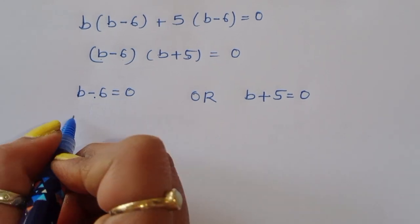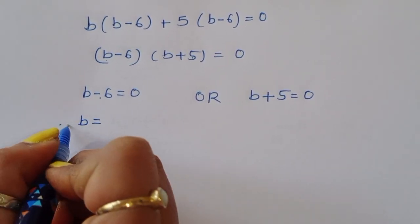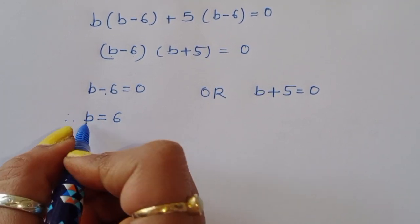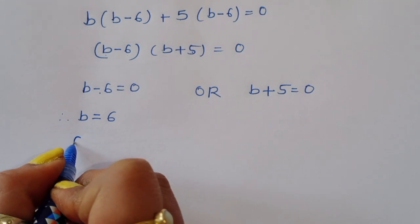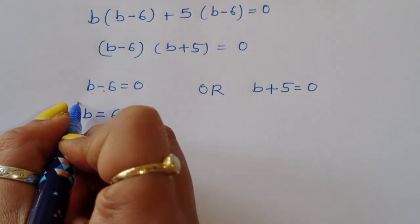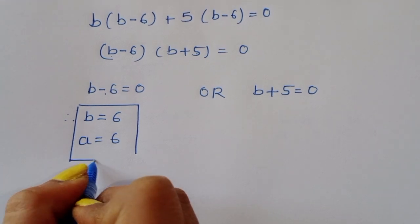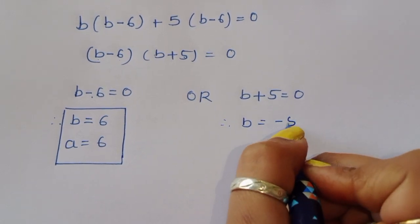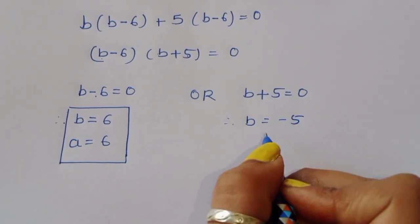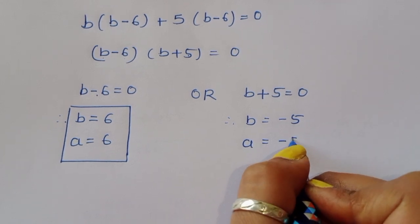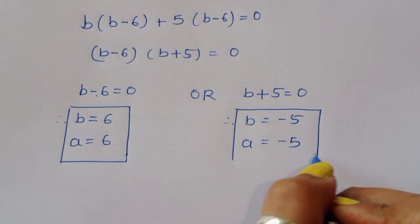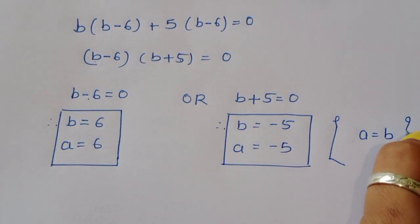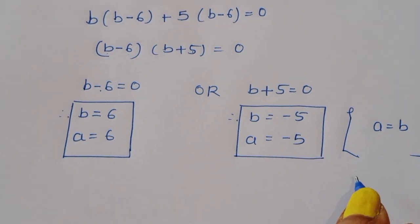From (b minus 6)(b plus 5) equals 0: either b minus 6 equals 0, giving b equals 6, or b plus 5 equals 0, giving b equals minus 5. Since a equals b, when b equals 6 then a equals 6, and when b equals minus 5 then a equals minus 5.